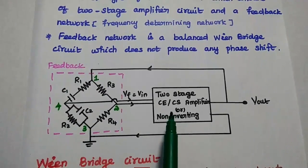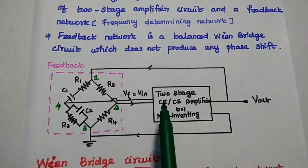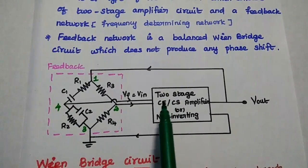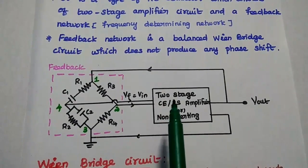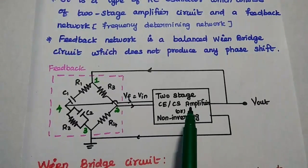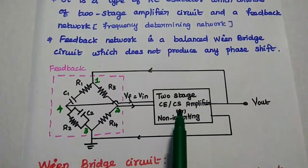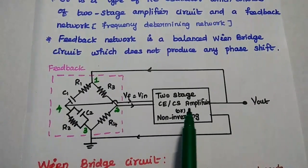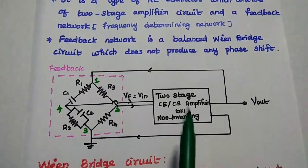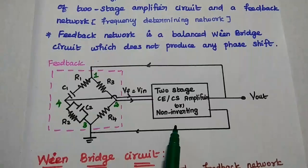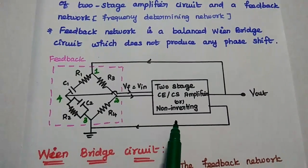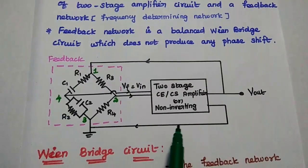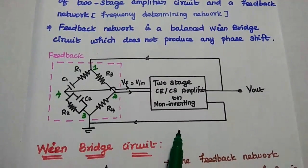In this amplifier, we can have a two-stage common emitter transistor amplifier circuit or a common source field effect transistor circuit. In the case of an operational amplifier, we can use a non-inverting op-amp.